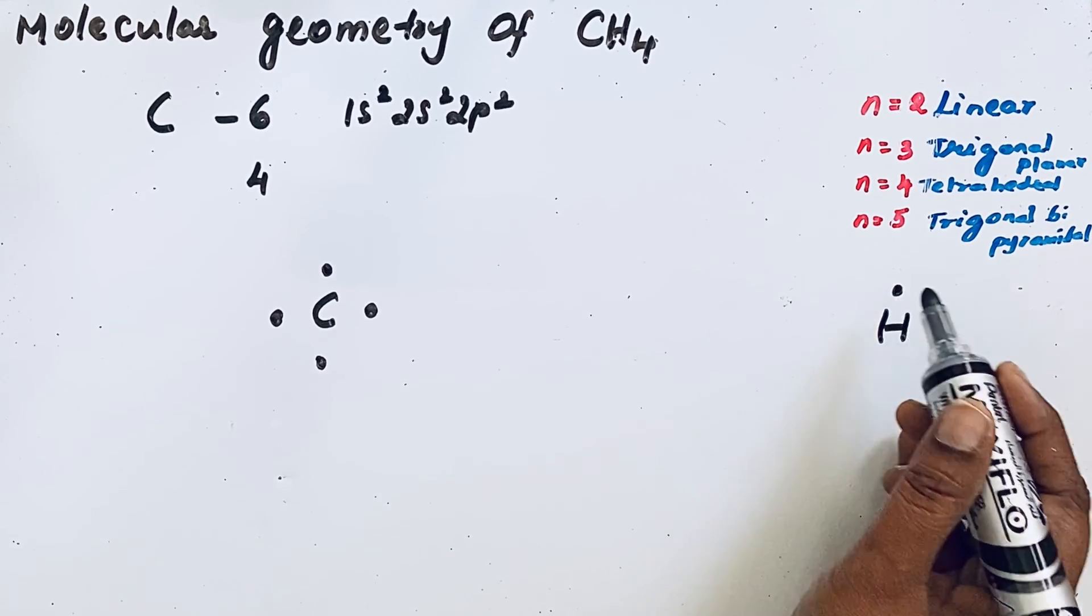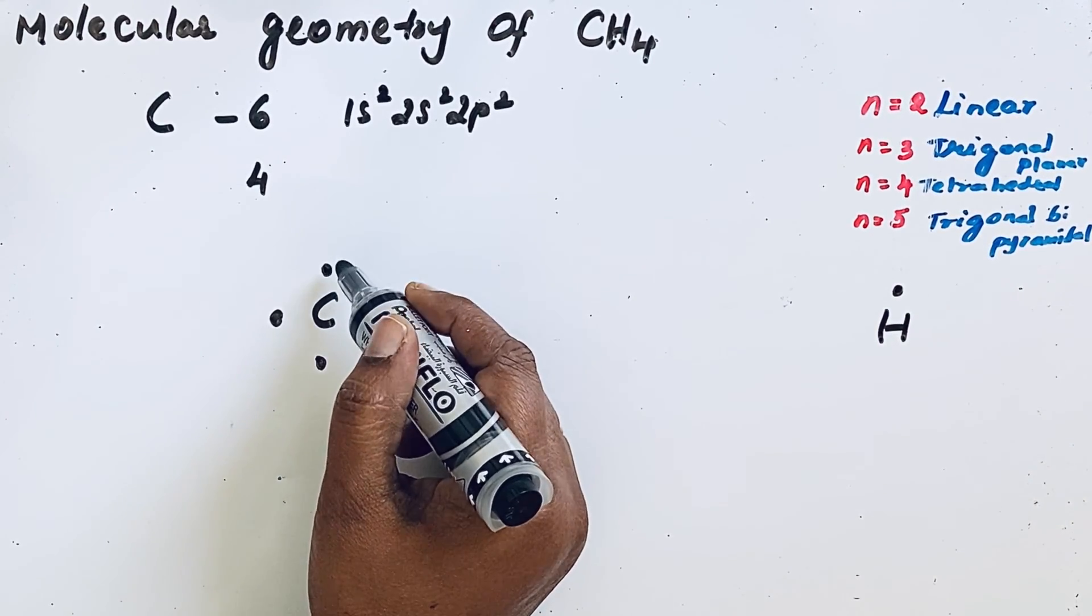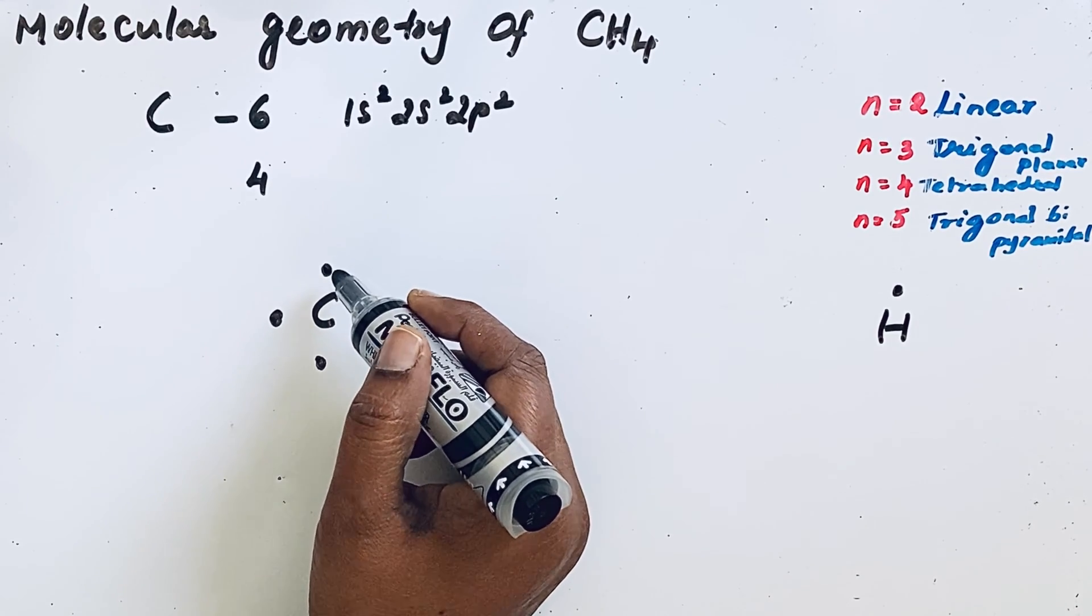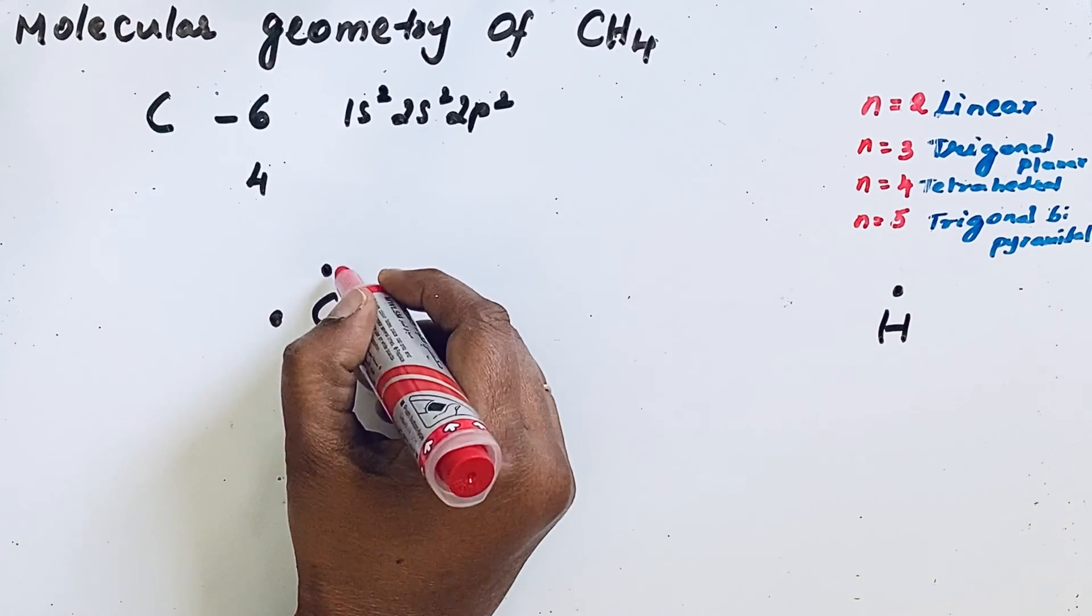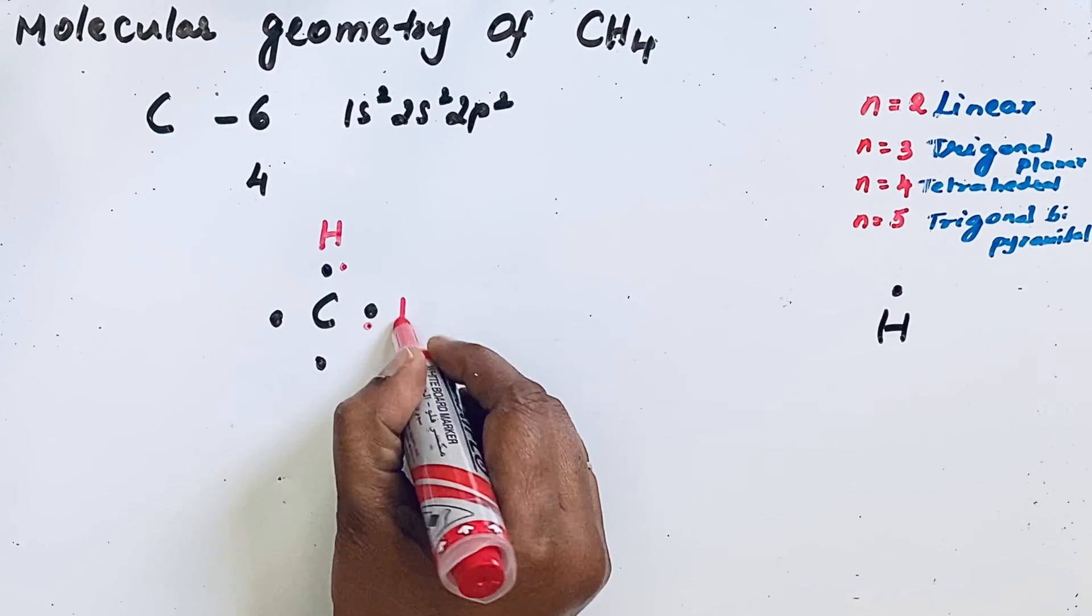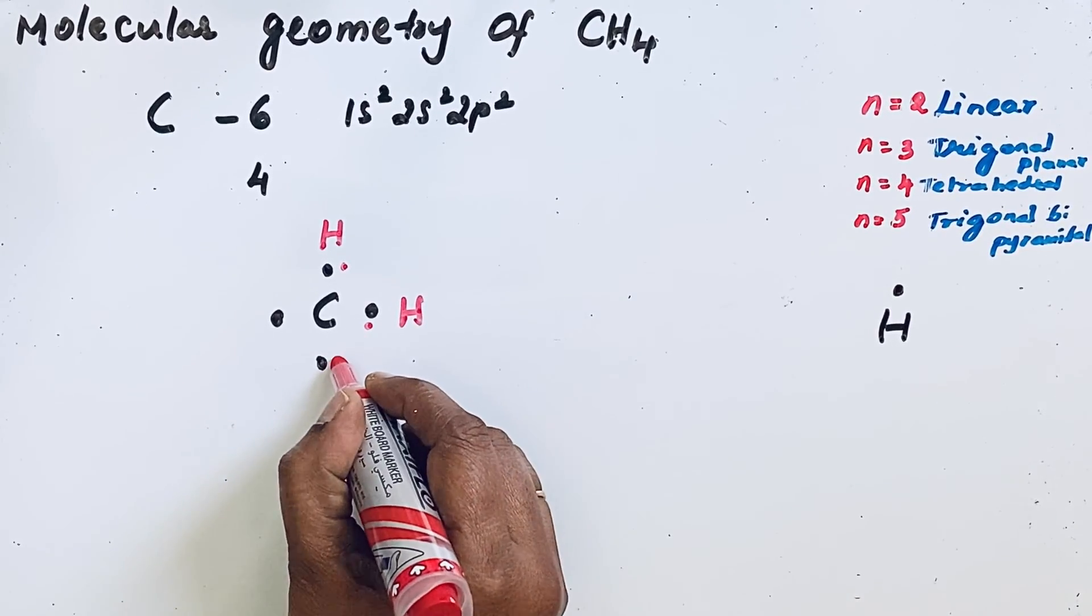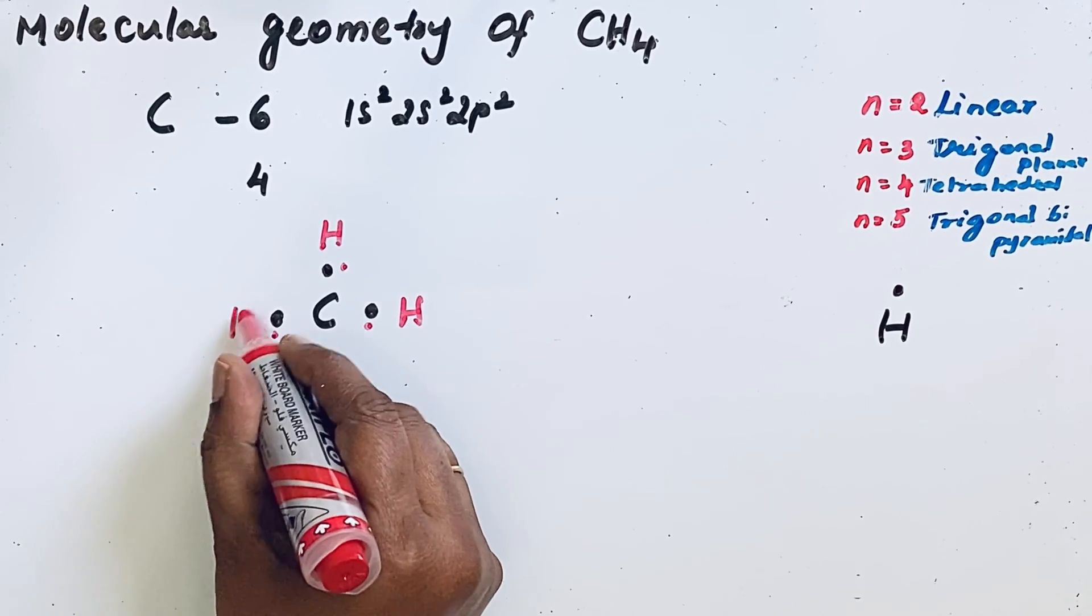This valence electron can make a bond with the carbon atom and form a covalent bond. Here carbon with hydrogen, in the same way here with hydrogen, then here hydrogen, then here also with hydrogen.